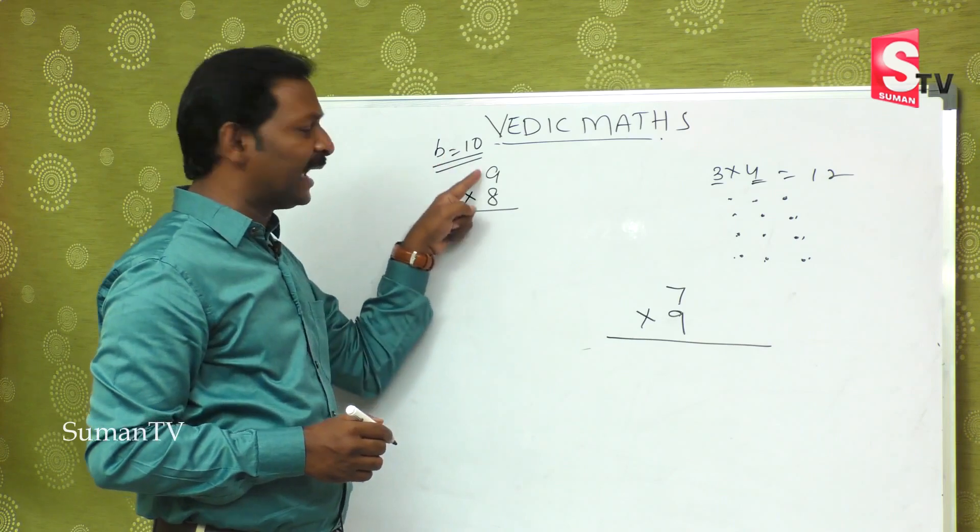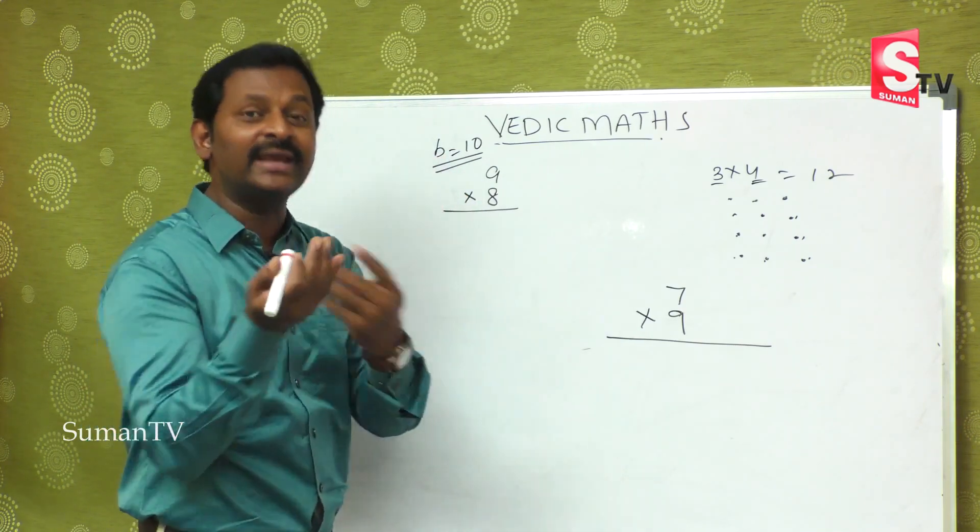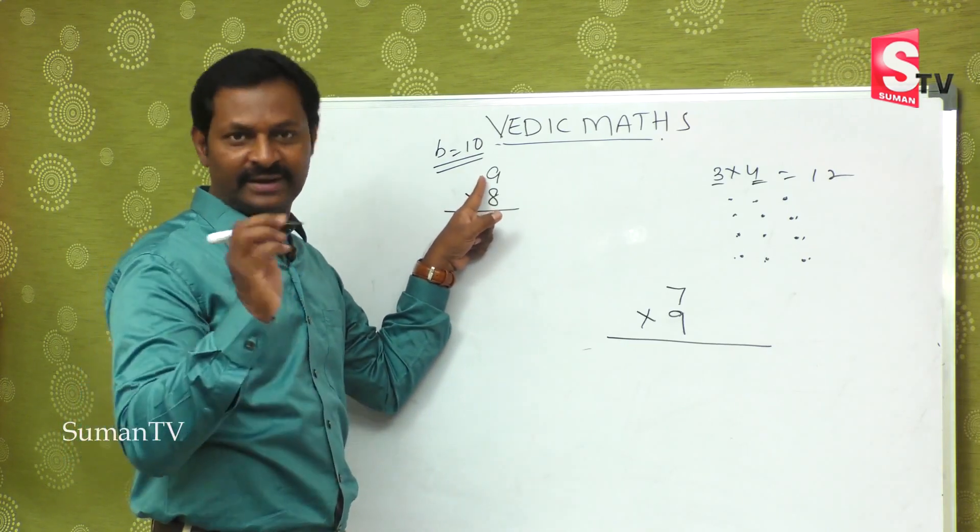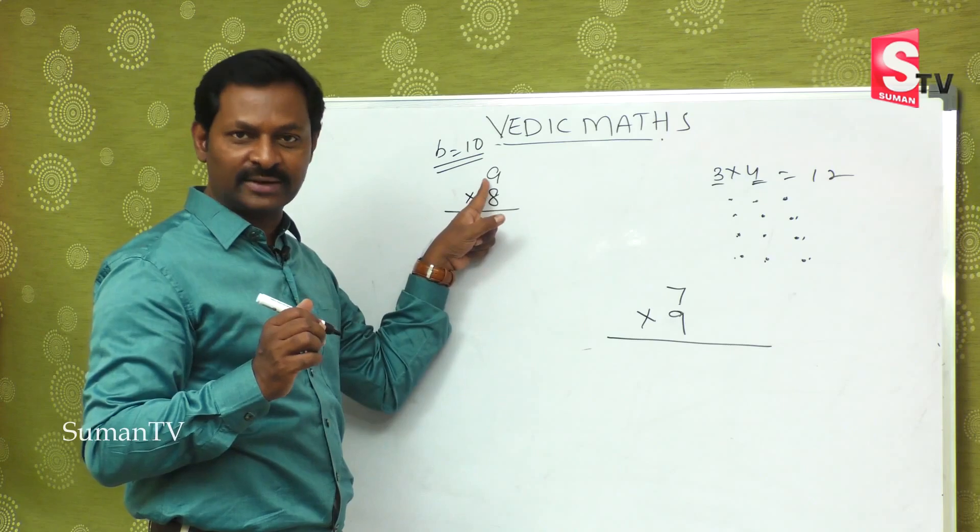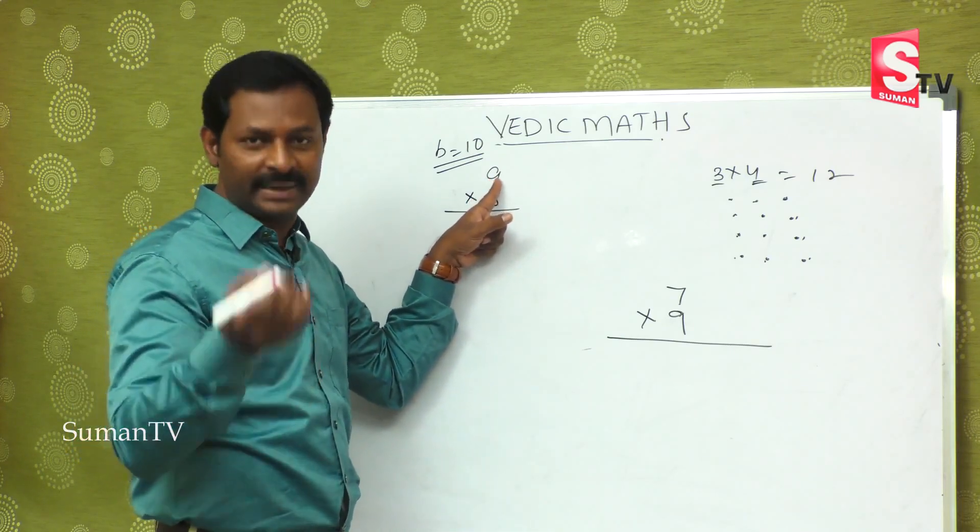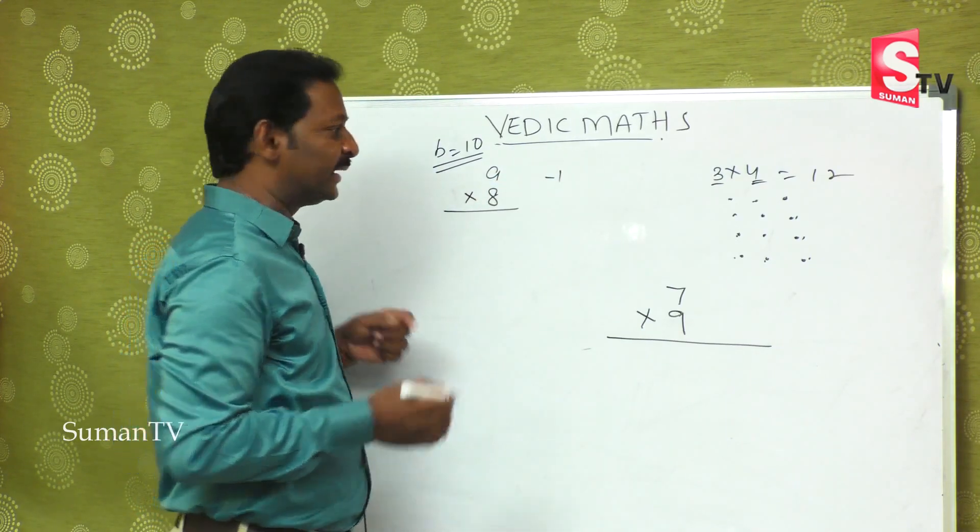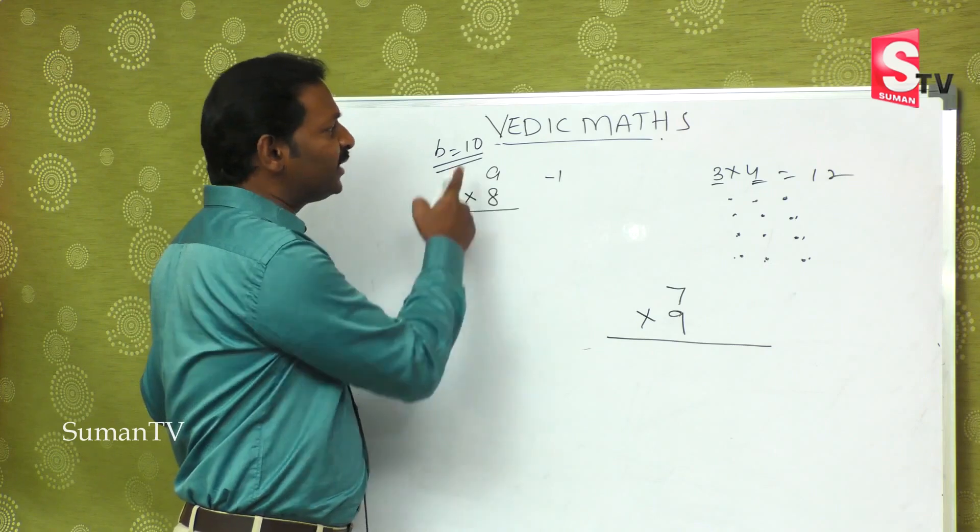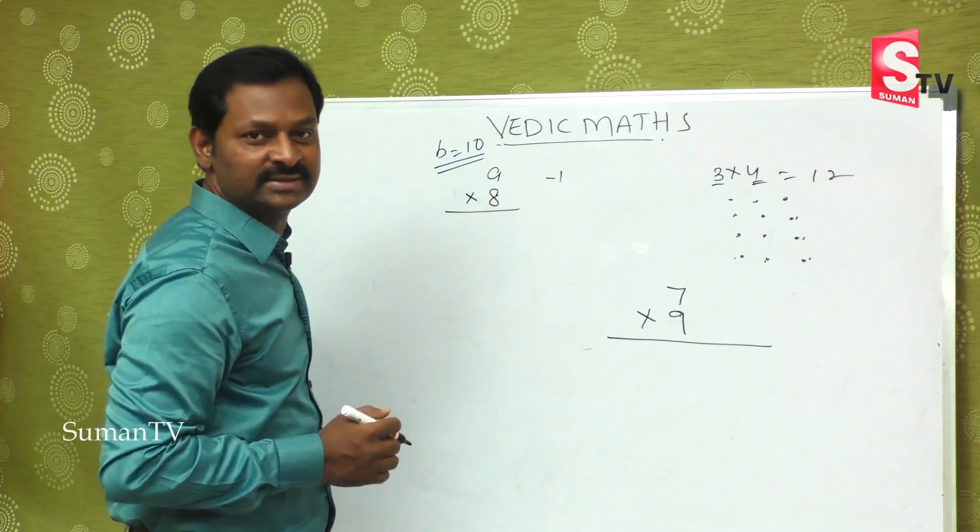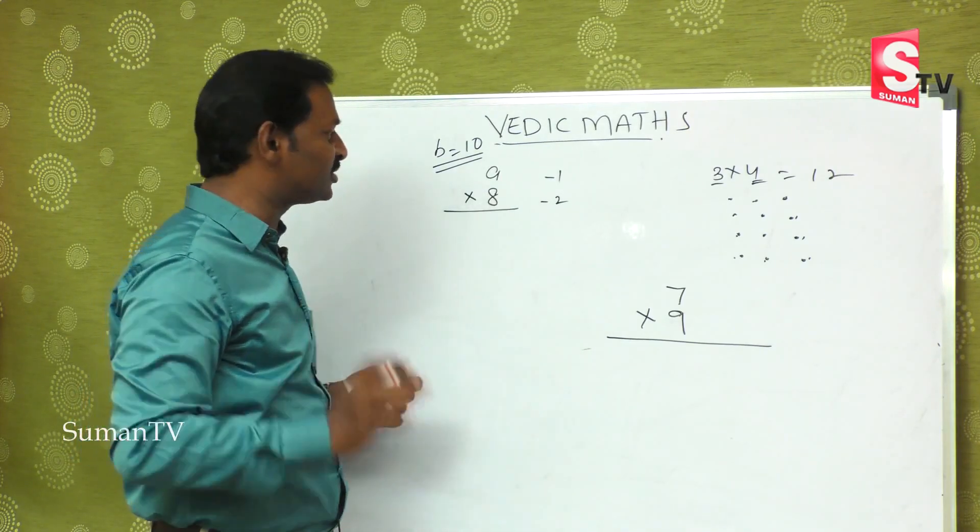For example, if you want to multiply these two numbers, you will start with the base number 10. What is that? It is 1. If you want to multiply these two numbers, you will start with minus. You will start with minus 1. Next, it is 8. If you want to multiply these two numbers, you will start with the base number 10. What is that? It is 2 digits. So, minus 2. Have you understood?